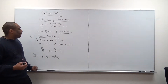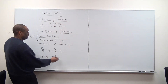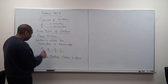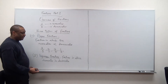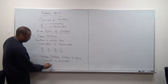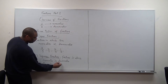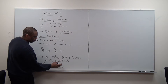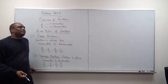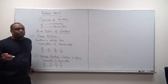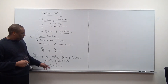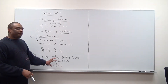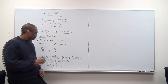The second type is the improper fraction. Improper fractions are fractions in which the numerator is greater than the denominator. Examples of improper fractions: five over three, seven over four, three over two, four over three. Note that two over one equals two and is considered a whole number rather than a fraction, so we exclude it.